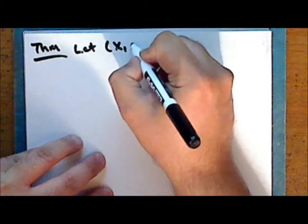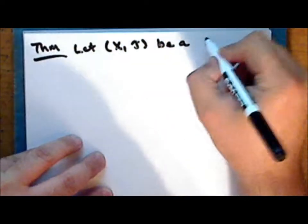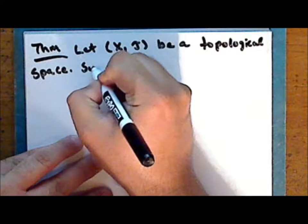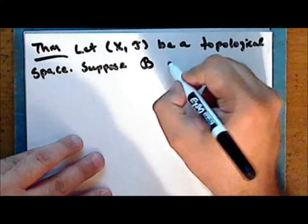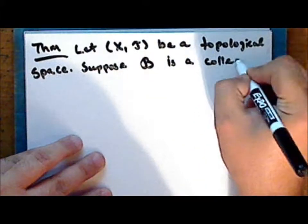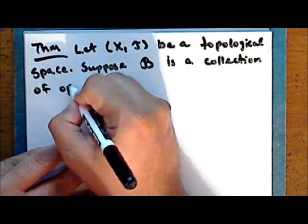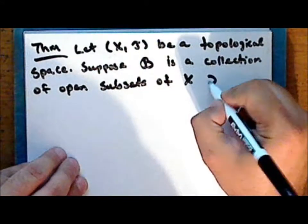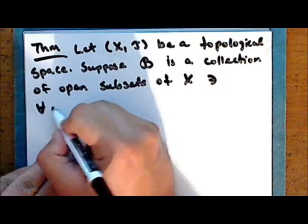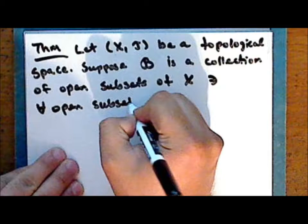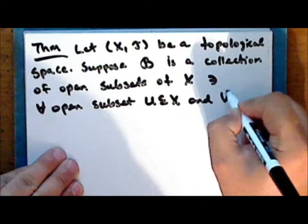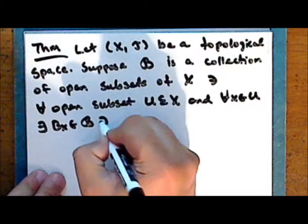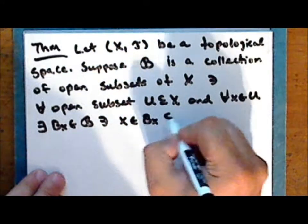Let X together with some topology τ be a topological space. Suppose that script B is a collection of open subsets of X such that for every open set U of X and for every point in that set, there exists an element B_x in the collection script B such that the point x is in this element, which is a subset of U.